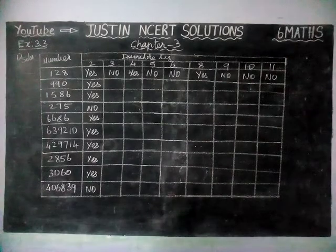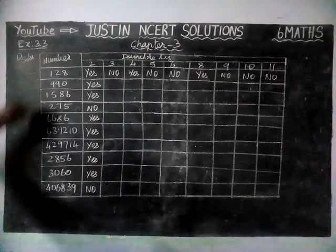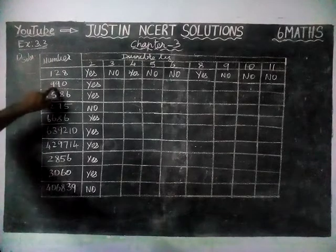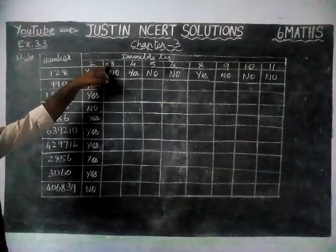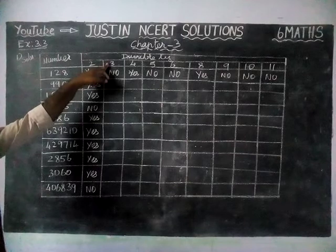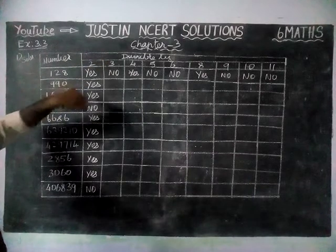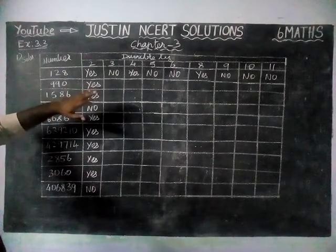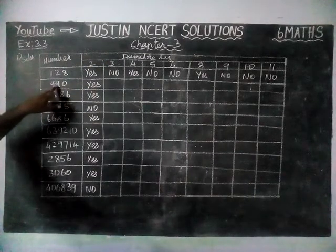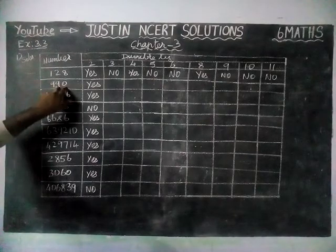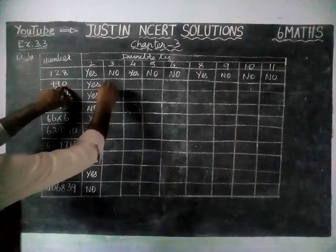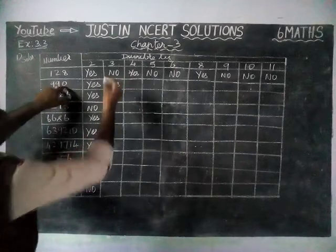Next, we are going to check for divisibility by 3. The divisibility rule is: if the sum of its digits is divisible by 3, that number is divisible by 3. Now we are going to check it. For 990: 9 plus 9 is equal to 18. That 18 is divisible by 3. Therefore, this number is divisible by 3.